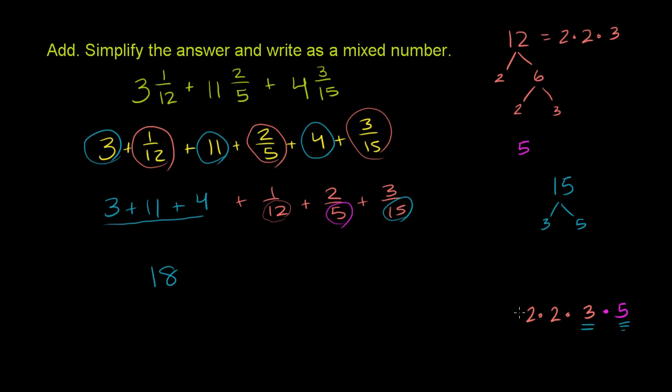You can see it has a 12 in it, a 5 in it, and a 15 in it. What is this number? 2 times 2 is 4, 4 times 3 is 12, 12 times 5 is 60. So the least common multiple of 12, 5, and 15 is 60.